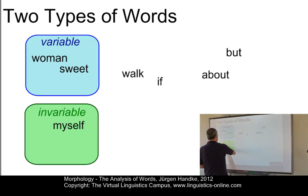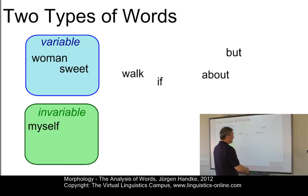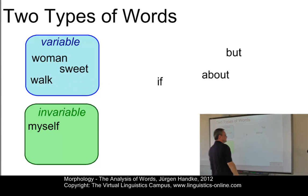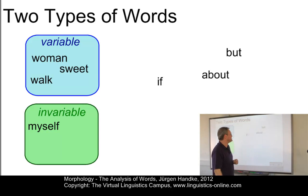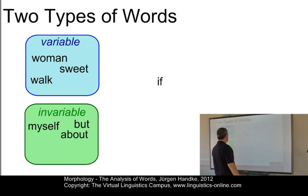Myself, a reflexive pronoun, is certainly invariable because you cannot add or reduce anything. Walk is clearly variable — it can be a noun or a verb; you can have walker, walkers, walks, walked, walking, etc. The preposition about is clearly invariable. And finally, the conjunctions but and if are also invariable.